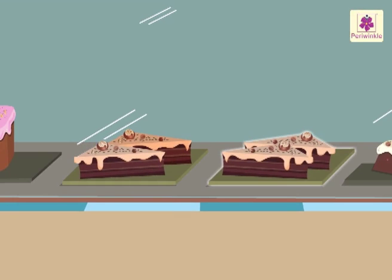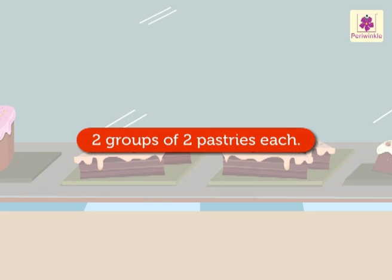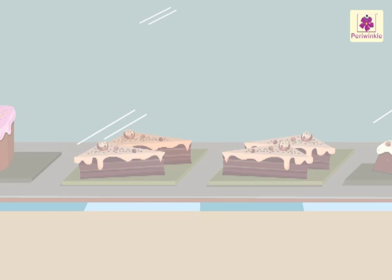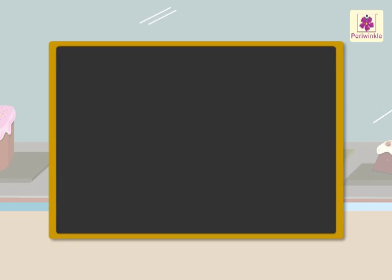Now, we have two groups of two pastries each. So, we say that 4 divided by 2 is 2.